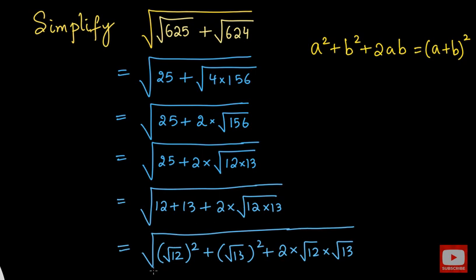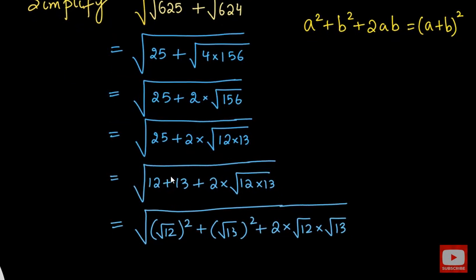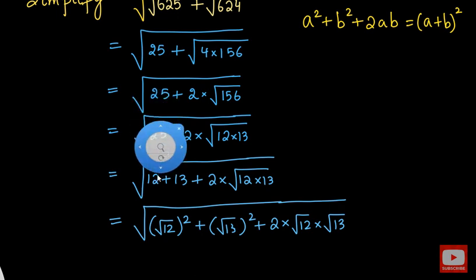We basically want to remove this big square root. So we have to express the term inside the radical as a perfect square. Then only we can get rid of the square root symbol.